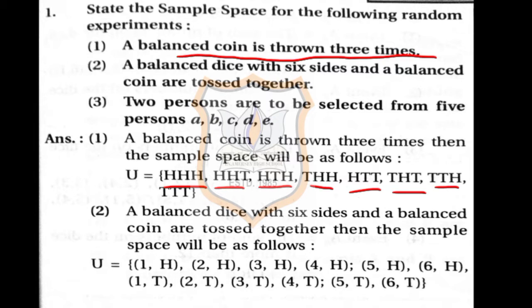Or you can get triple T — tail on all three coins: T, T, T. So this is the complete sample space of tossing a coin three times.